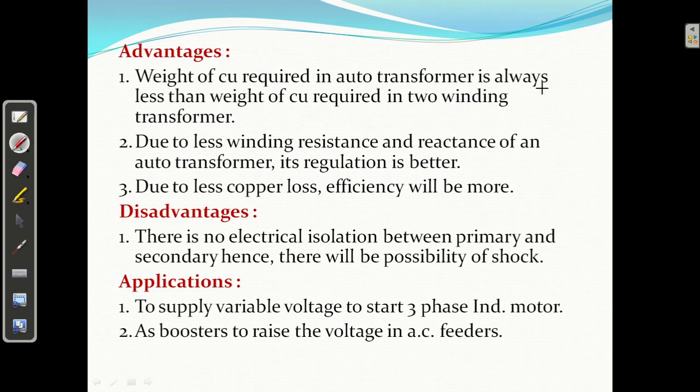What is auto transformer? It is a transformer with one winding only which is common to both primary and secondary. This is why both primary and secondary are not electrically isolated from each other as in case of two winding transformer. Due to only one winding, auto transformer requires less copper, hence it is cheaper. Advantages: weight of copper required in auto transformer is less than weight of copper required in two winding transformer. Second, due to less winding resistance and reactance, its regulation is better. Third, due to less copper loss, efficiency will be more. Disadvantage: there is no electrical isolation between primary and secondary. Applications: to supply variable voltage to start three phase induction motor using variac, as a booster to rise the voltage in AC feeders.